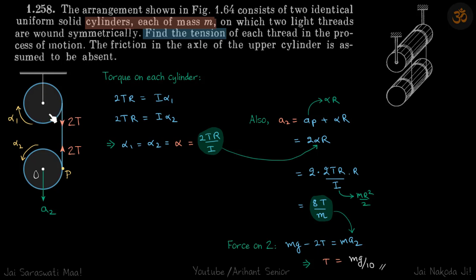Let's immediately write the torque equation on each cylinder, assuming the angular accelerations to be alpha 1 and alpha 2. Let's say the center of mass is moving down with acceleration a2. So 2TR equals I alpha 1, and 2TR equals I alpha 2.